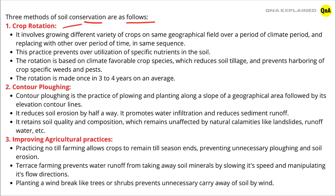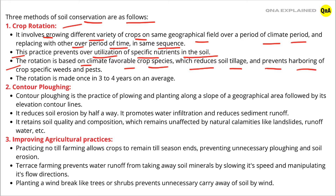First is crop rotation. It involves growing different varieties of crops on the same geographical field over a period of time and replacing with other crops over a period of time in the same sequence. This practice prevents over-utilization of specific nutrients in the soil. The rotation is based on climate-favorable crop species, which reduces soil tillage and prevents harboring of crop-specific weeds and pests. The rotation is made once in three to four years on average.